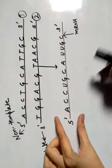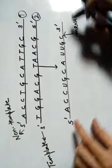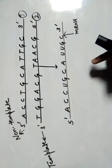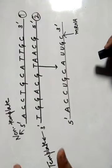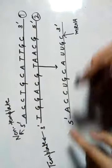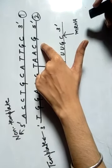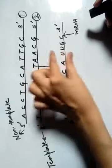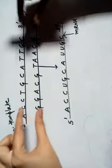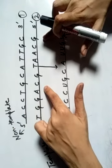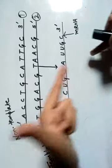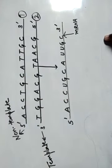Now just focus on your mRNA molecule. You can see that the sequence of your mRNA molecule is complementary to strand number two. The mRNA molecule is complementary to strand number two while exactly similar to your strand number one. Why? Because strand number one is also complementary to your strand number two. So when strand number two is transcribed into mRNA, the mRNA will be exactly similar to your strand number one.